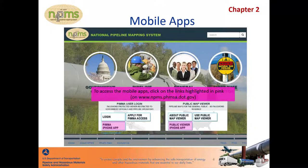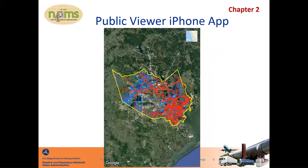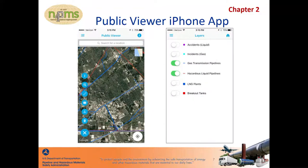You can download the mobile apps by visiting these links on the NPMS homepage. The buttons highlighted will show you how to go to the app store and find the apps. As you can see with the public viewer iPhone app, you can see one county and state per session — Harris County, Texas is shown on this slide. The gas lines are in blue and the liquid lines are in red. You would click the X on the bottom left to open the toolbar. You can see how you can turn the layers on and off and how accidents and incidents are included.